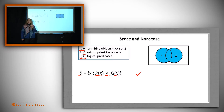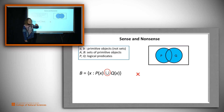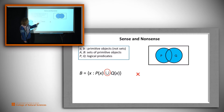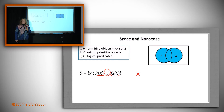It might have occurred to us to write something different — but that is nonsense. What we were thinking, perhaps, is suggested by this picture: we want the union of everybody who possesses the P property and everybody who possesses the Q property. But we can't write it that way, because we can't union logical operators. What we wrote first was right.